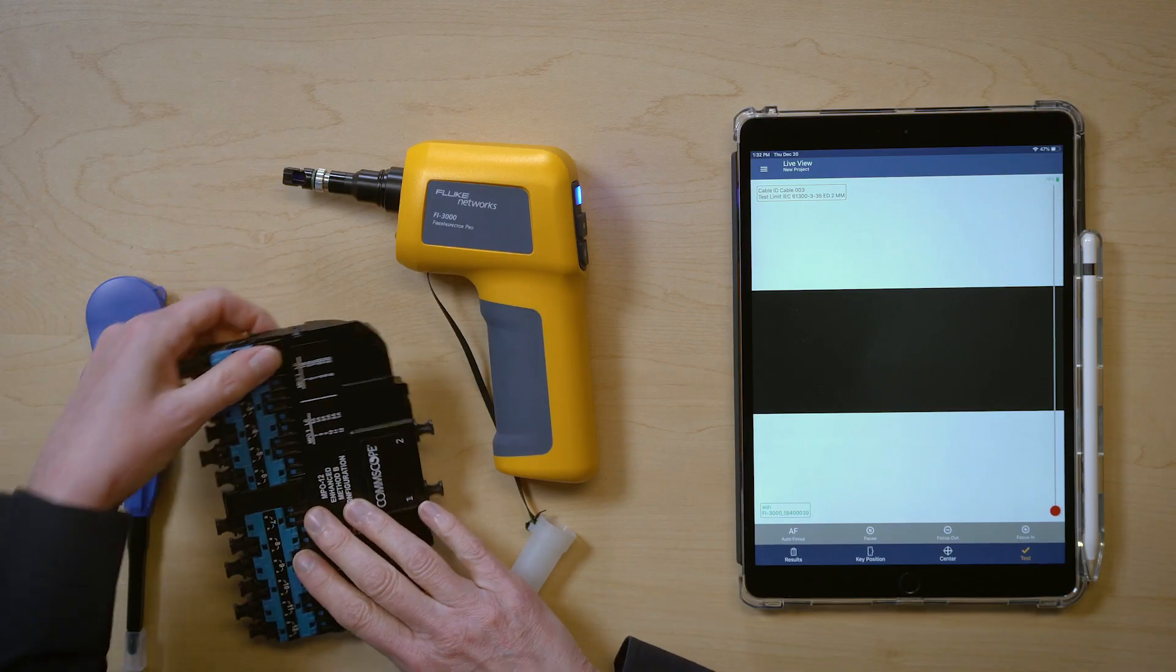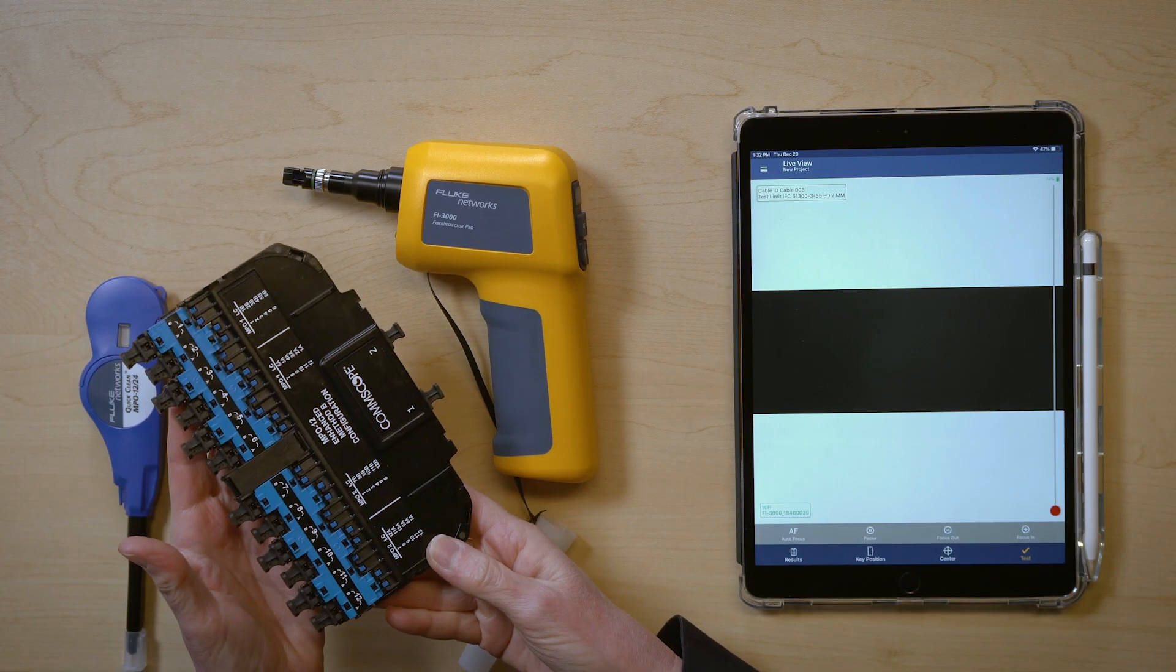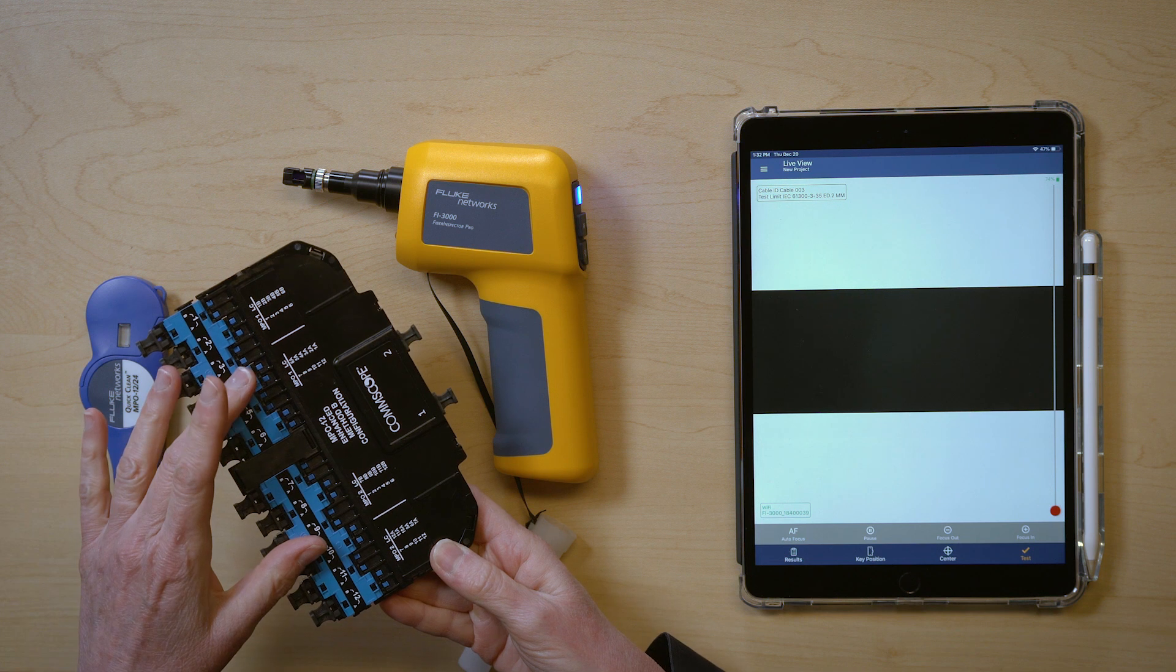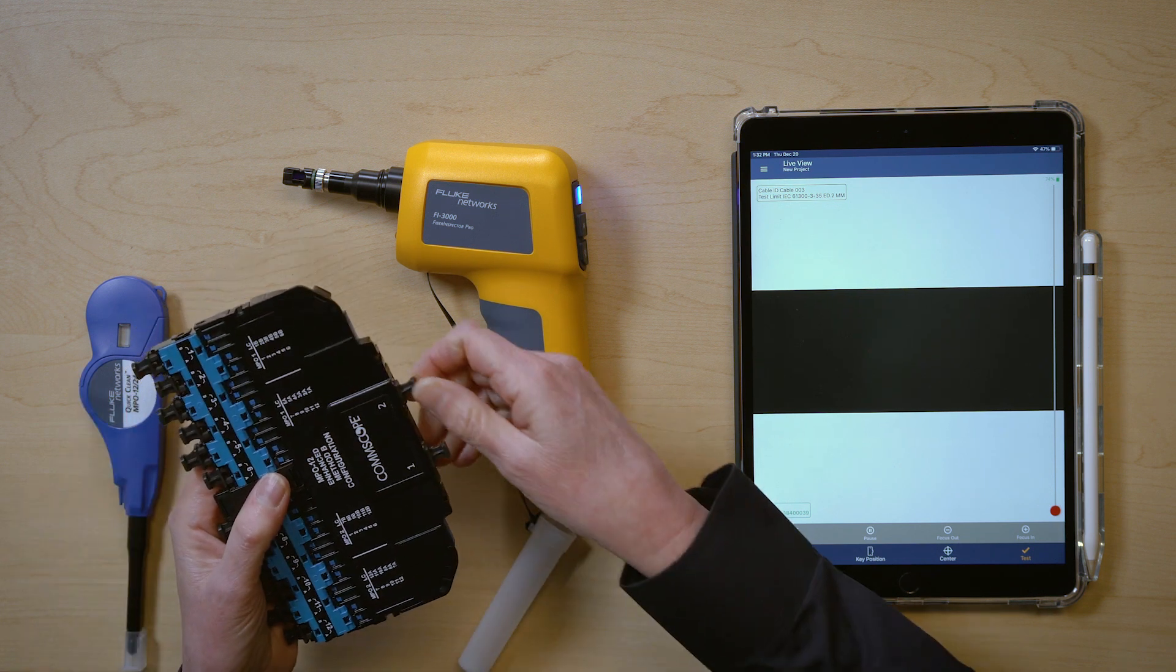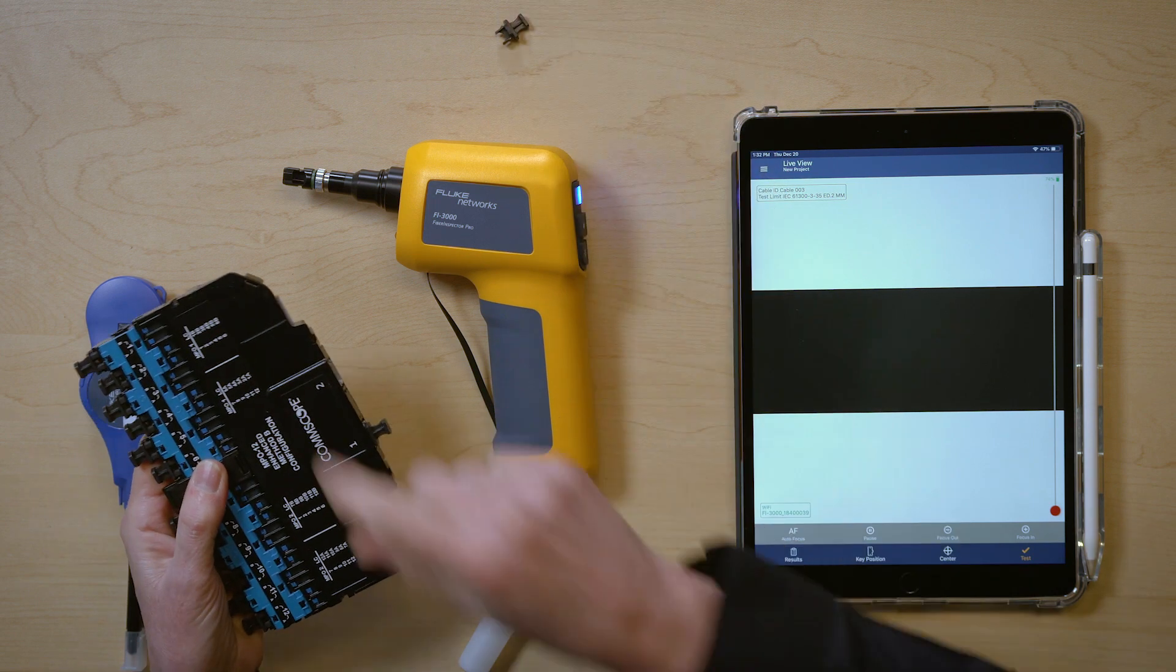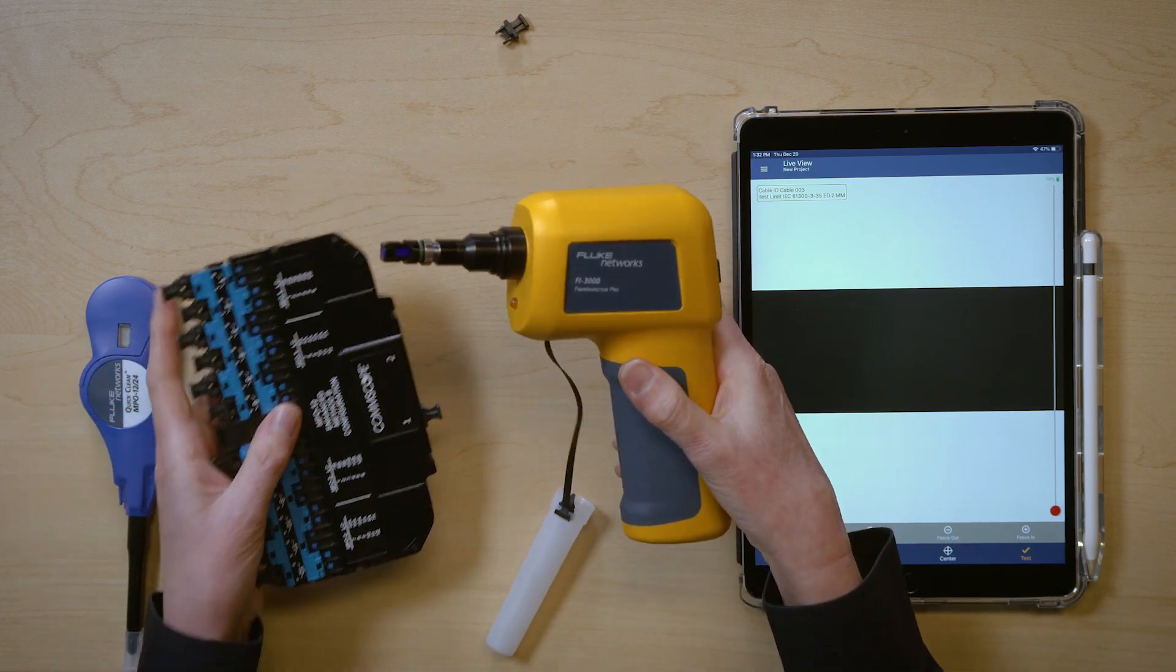Besides just being able to visually inspect an end-face, the Fi3000 can also inspect a port. For example, here I have a cassette that you might find in a data center, which has duplex LC on one side and MPO on the other. Let's go ahead and visually inspect this MPO port, which happens to be an APC port.